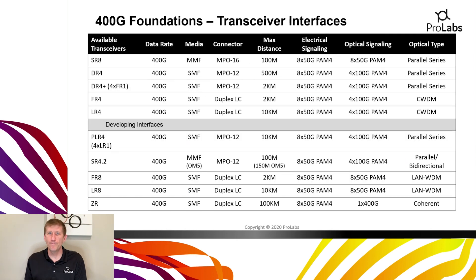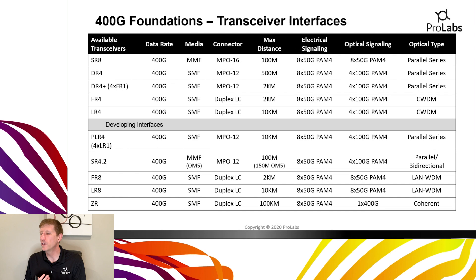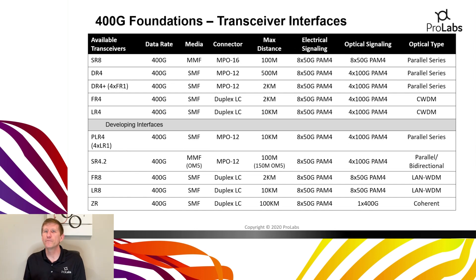PAM4 has a big impact on transceiver interfaces. On the multi-mode side, the SR8 uses a new MPO-16 connector with a maximum reach of 100 meters. On the electrical side it has 8x50 PAM4 electrical signaling, and on the optical side it also has 8x50 PAM4 optical signaling — eight transmit and eight receive pairs in that fiber connection.